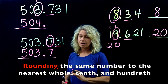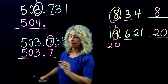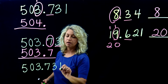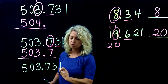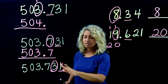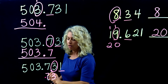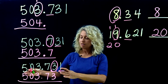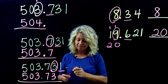What if we rounded the same number to the hundredths place? Take 503 and 731 thousandths — circle the hundredths place. Underline the digit to the right; it's 1, which is 0 to 4, so the number stays the same. The 3 remains the same and we bring the rest of the digits down. Rounded to the nearest hundredth, this is 503 and 73 hundredths.